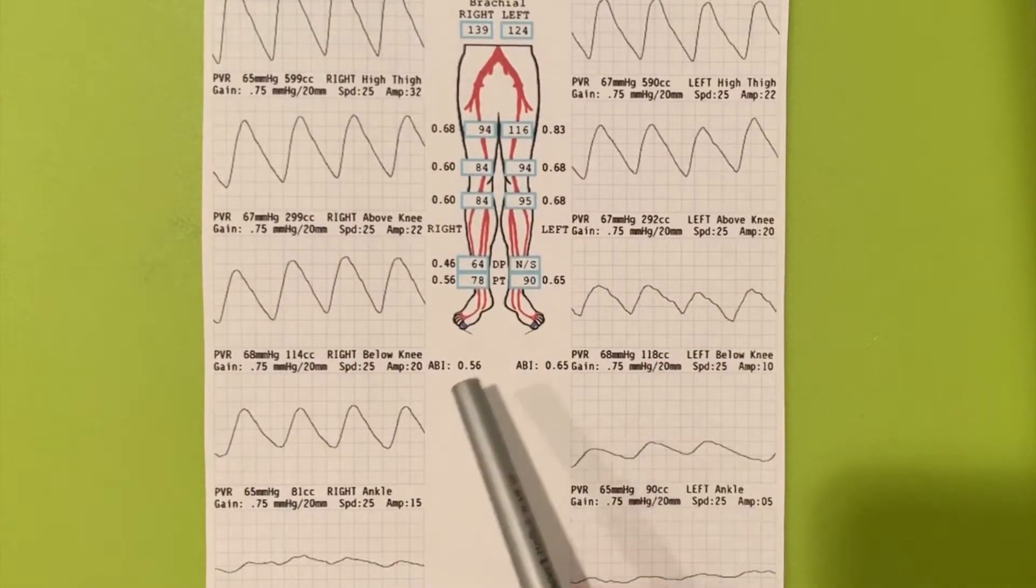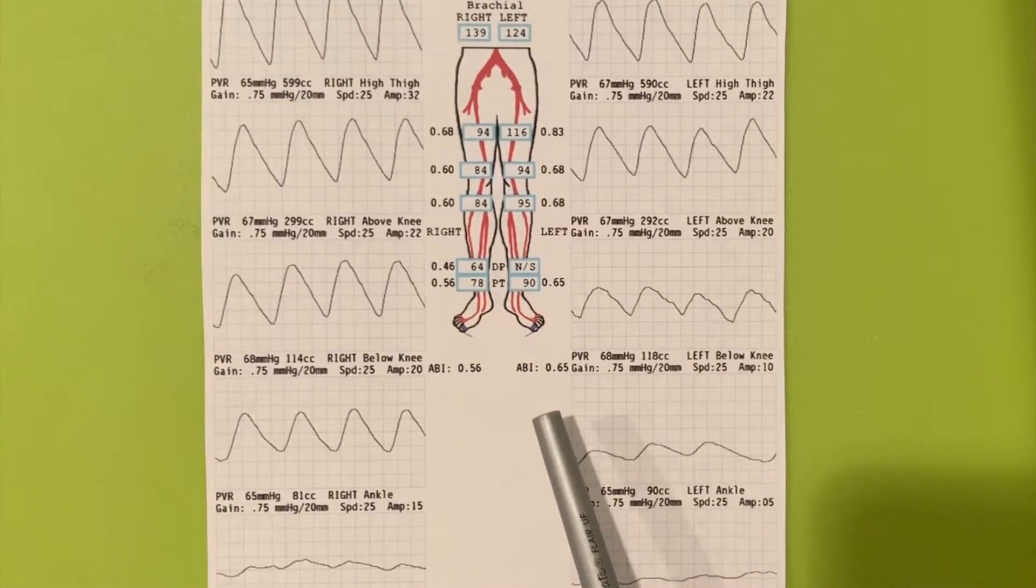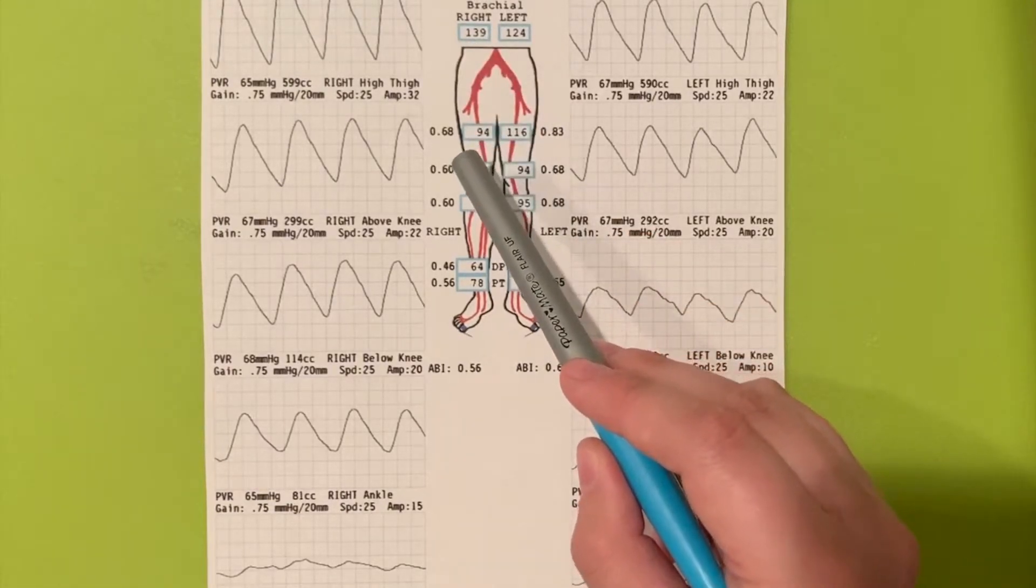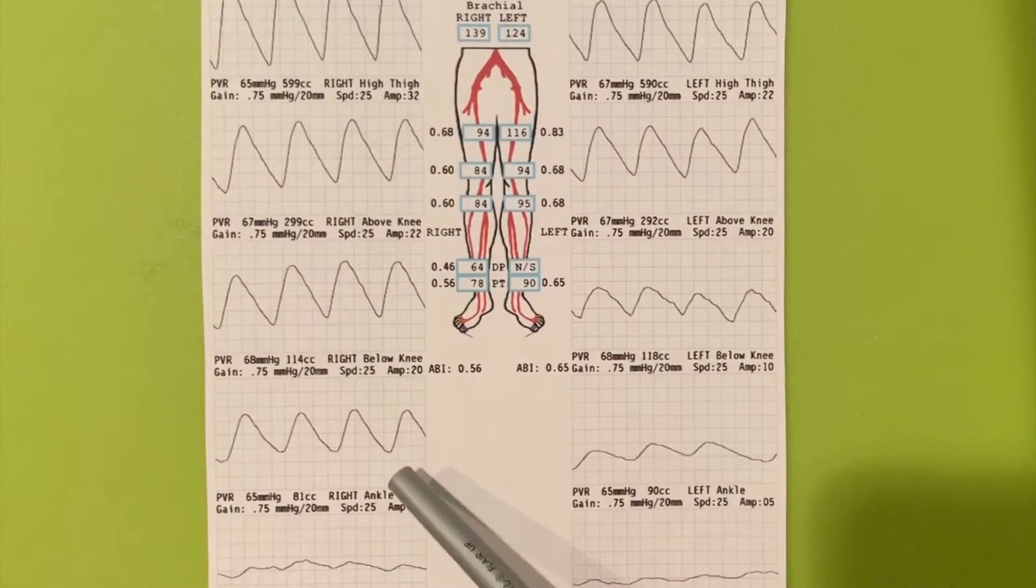The ABI for the right leg is 0.56 and the ABI for the left leg is 0.65, which indicates probable claudication in both legs. The pressure drop between the brachial and high thigh on the right leg is 45 millimeters of mercury, which is an indication of inflow disease. The PVR waveforms on the right are a little less severe all the way down. However, the right ankle shows signs of moderate disease and metatarsals show severe disease, also consistent with significant occlusive disease.